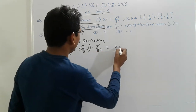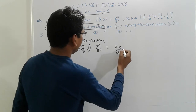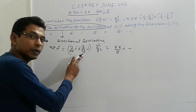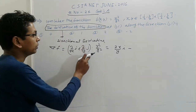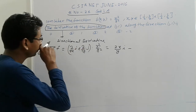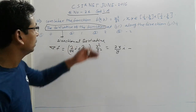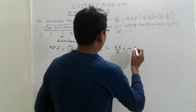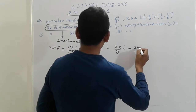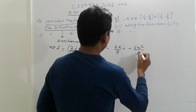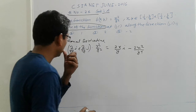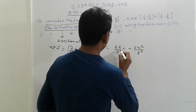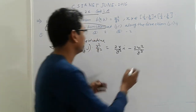Differentiating: with respect to x we get 2x upon y squared, into i. With respect to y, we get minus 2x squared upon y cubed, into j. So the gradient del f equals (2x/y²)i + (−2x²/y³)j.